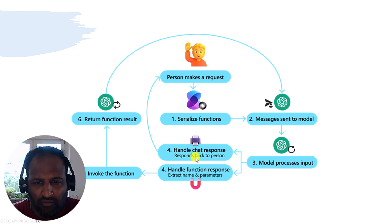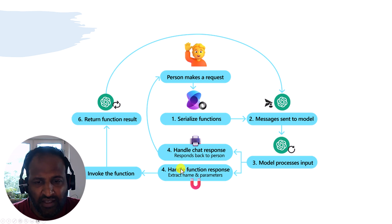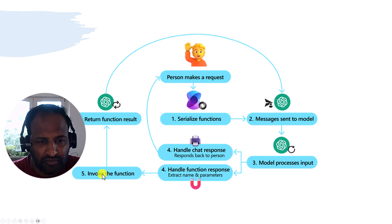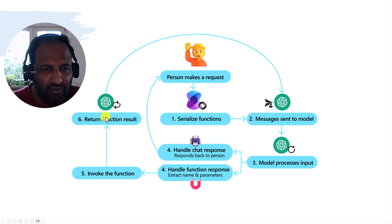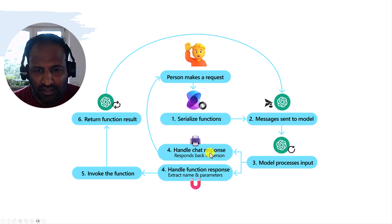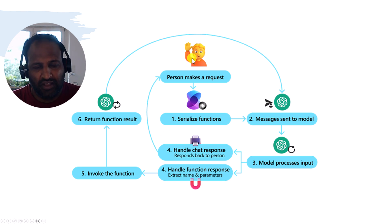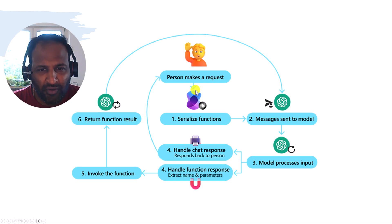Once the model response is available, we send the response back to the user. Meanwhile, we check if any function response is available. If it is, we invoke or auto-invoke the function. Once we receive the function result, that information is sent back to the model. The model processes it again and sends the response back to the user. This is the workflow for both auto and manual function calling.